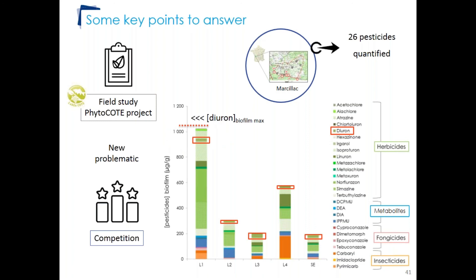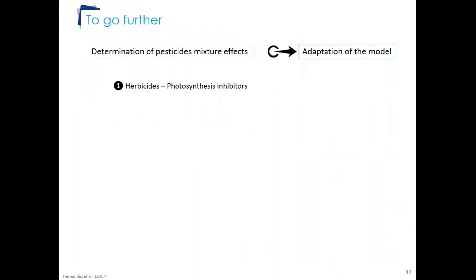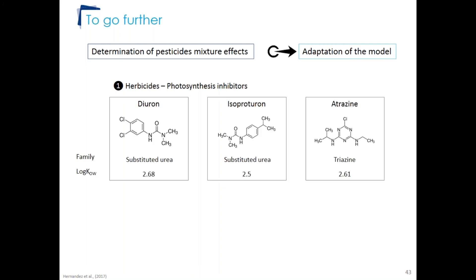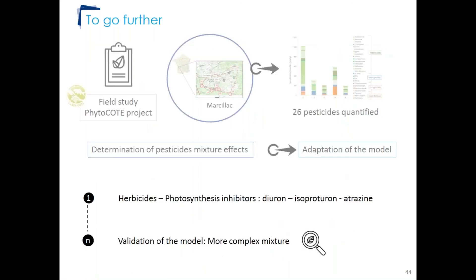These results raise new questions about competition phenomena. It is possible to adapt the models to mixture effects — for example by performing experiments with a mixture of pesticides, such as three different photosynthesis-inhibiting herbicides: diuron (from the phenylurea family), isoproturon, and atrazine (from the triazine family). Bioaccumulation for each molecule alone and in mixture could be assessed, and the EC50 for each molecule determined using the additive model. This would be just the first step; a more complex mixture would be needed to fully validate the model.